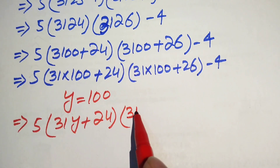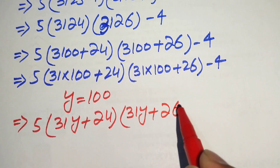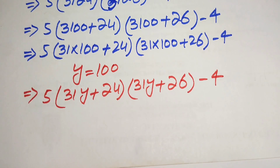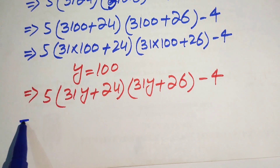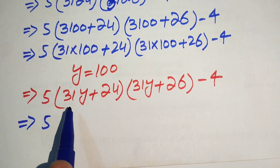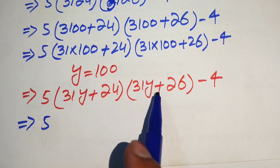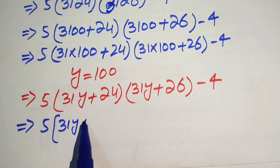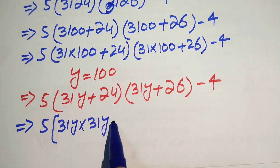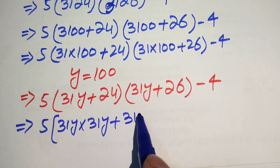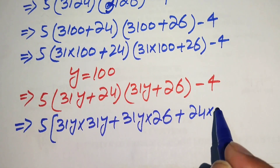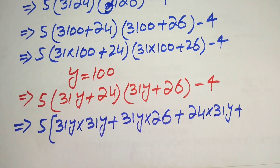With y equal to 100, the expression becomes 5 into 31y plus 24, times 31y plus 26, minus 4. We now expand by multiplying these two factors — first multiplying 31y by both terms, then multiplying 24 by both terms.